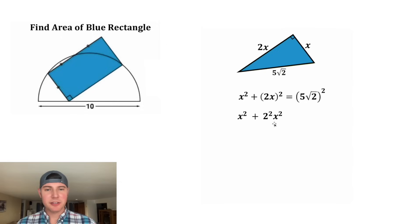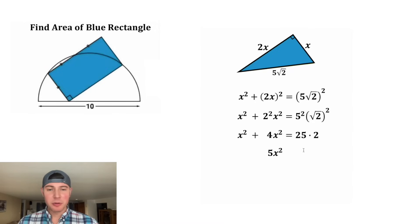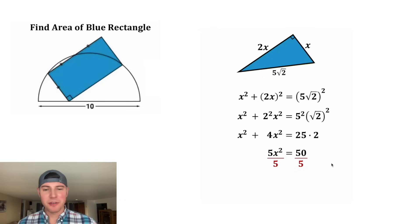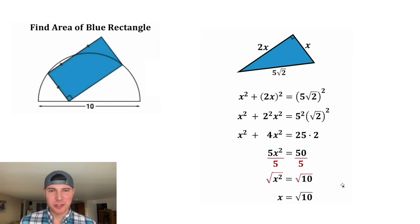We can bring down the x² and then this squared will go to both the 2 and the x, and this 2 will go to both the 5 and the square root. So we have x² + 4x² = 25 × 2. x² + 4x² equals 5x², and 25 × 2 equals 50. After we divide both sides by 5, we get x² = 10, and after we square root both sides, x = √10.